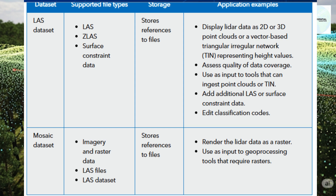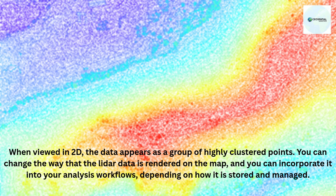LiDAR in 2D and 3D: one of the main advantages of using LiDAR point cloud data is that each LiDAR point contains not only the location measurement (X, Y) of an object, but also its height or elevation, Z. Because of this Z-value measurement, you can easily view and work with LiDAR data in 3D scenes in ArcGIS Pro in addition to 2D maps.